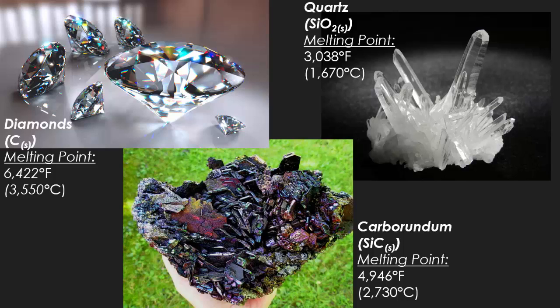The second example is carborundum, which is a silicon carbide molecule. Unlike diamonds, these are dark crystals that give off their own unique rainbow effect without needing light to pass through them. Carborundum melts at around 4,946 degrees Fahrenheit, also incredibly hot.